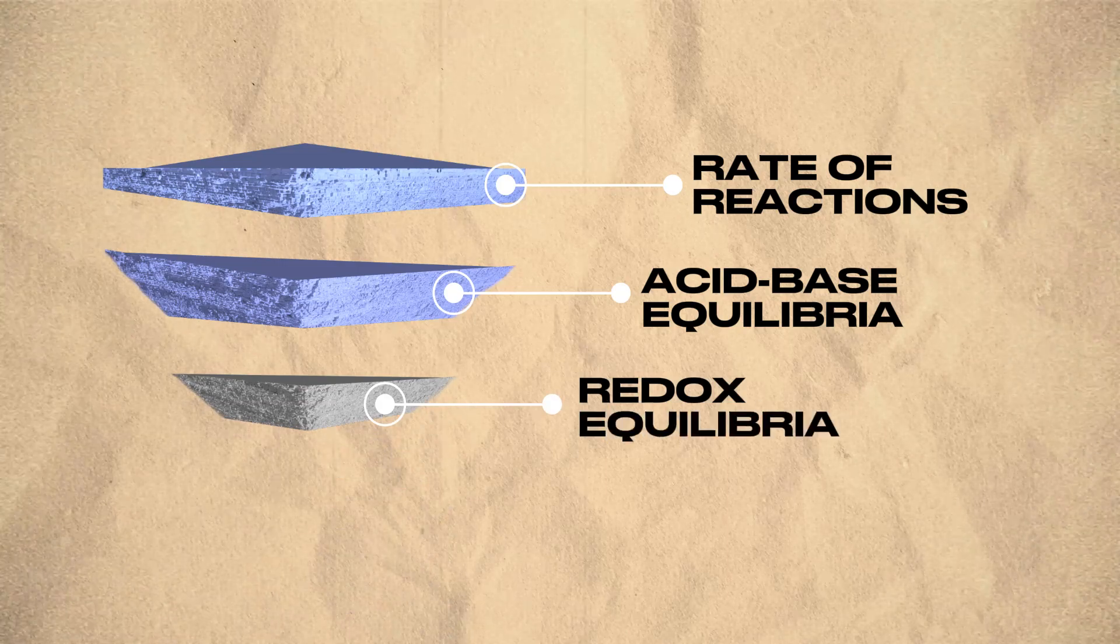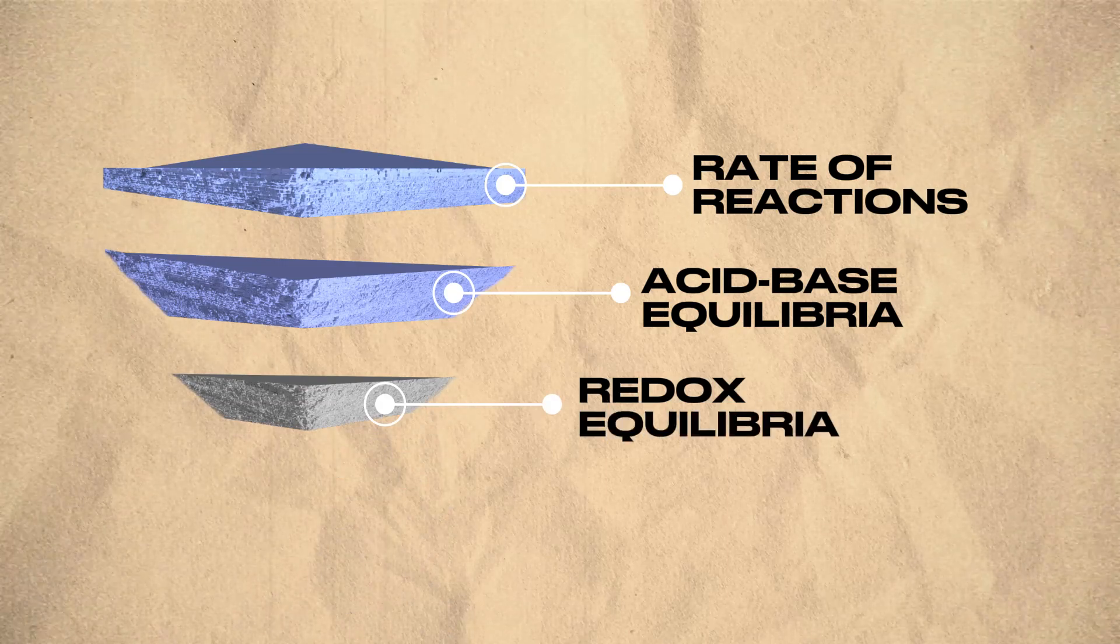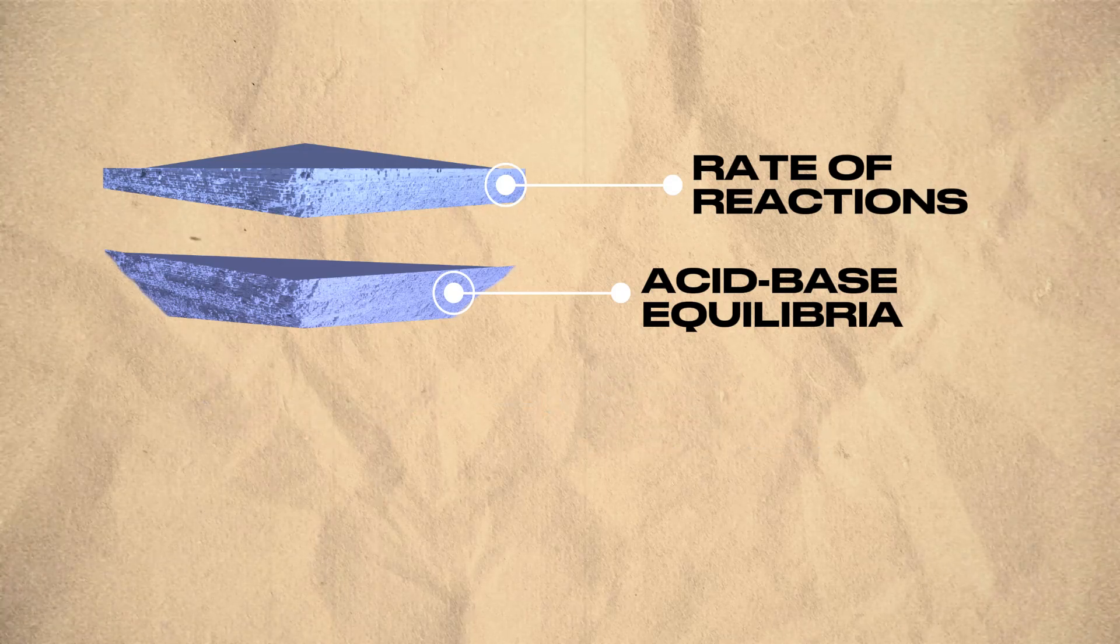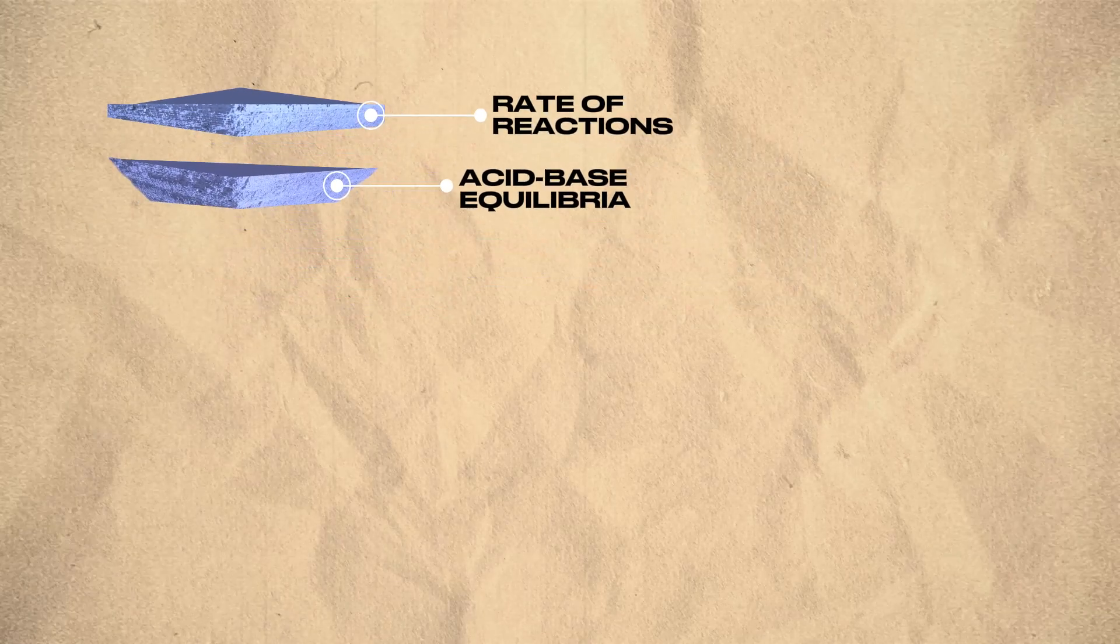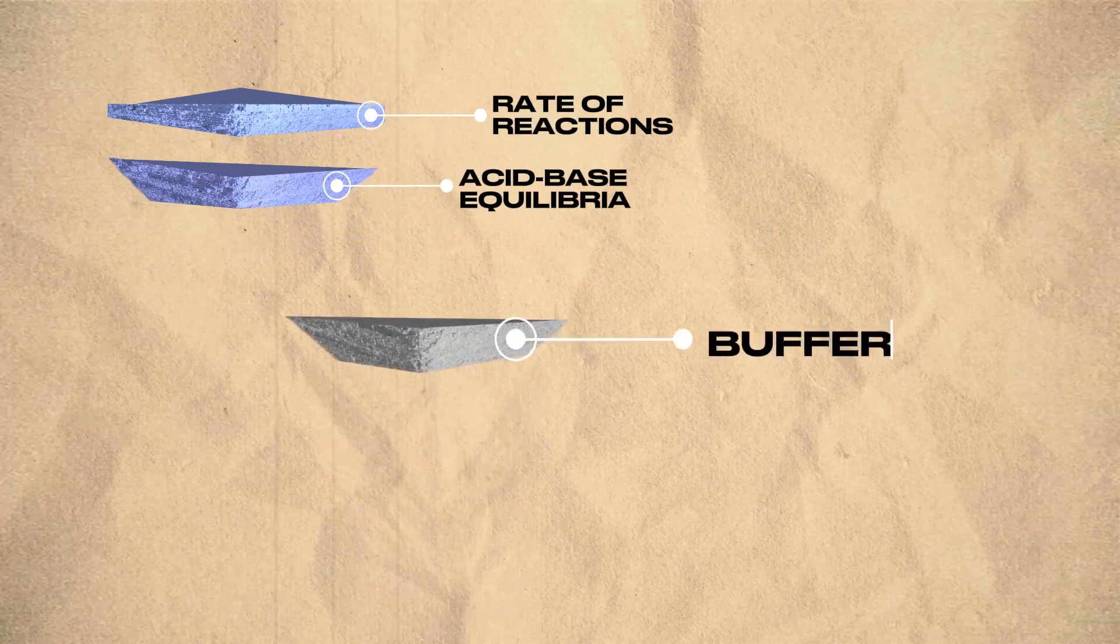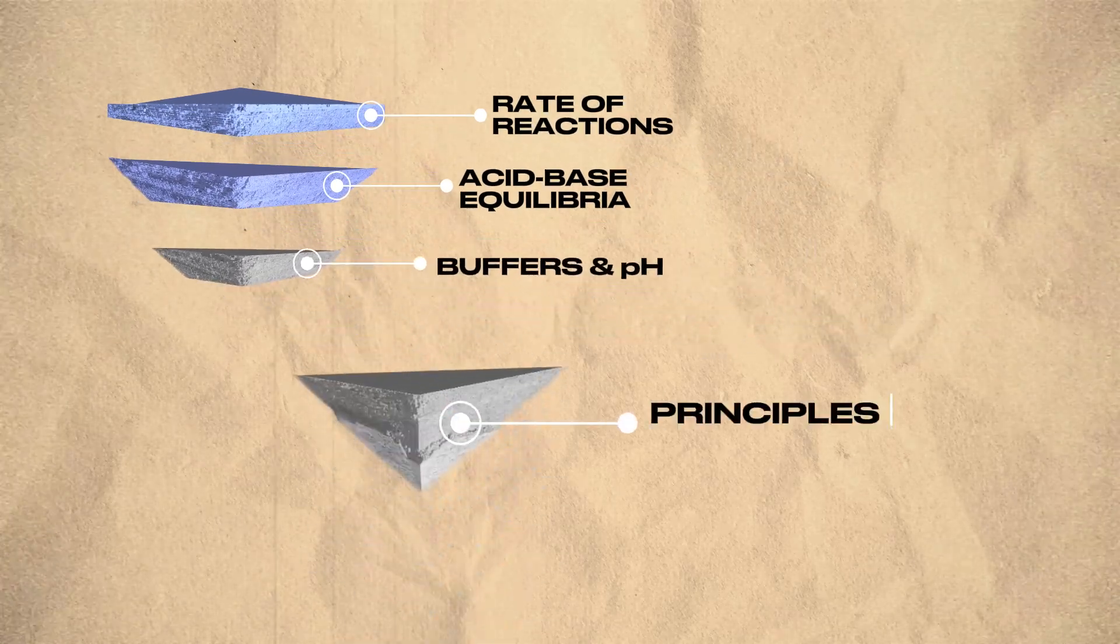But the first two topics, though frequently paired, sometimes appear without the redox equilibria topic. They are often shown with lower probability topics like buffers and pH, or principles of equilibrium.